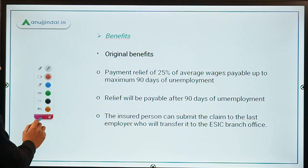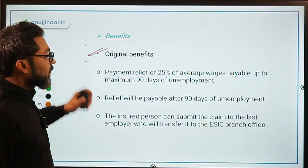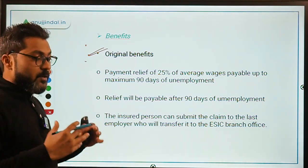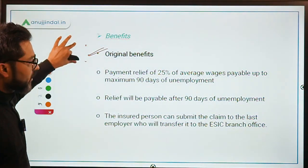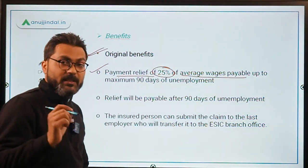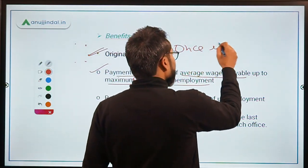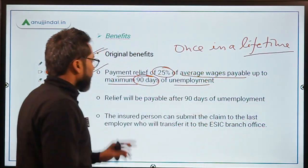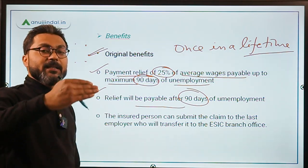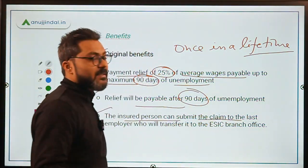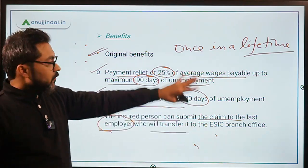Now let's talk about the original benefits. Payment relief of 25% of average wages is payable up to a maximum of 90 days of unemployment, and this is payable only once in a lifetime. This 25% relief will be payable after 90 days of unemployment. The insured person can submit the claim to the last employer, who will transfer it to the ESIC branch office.